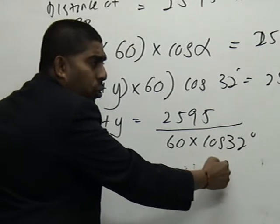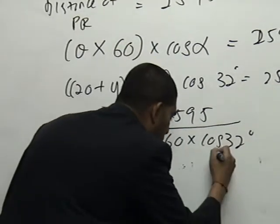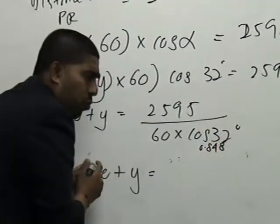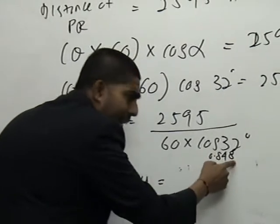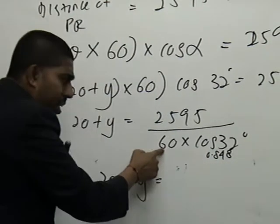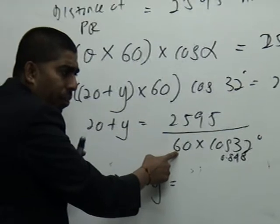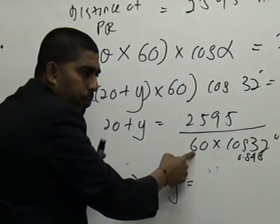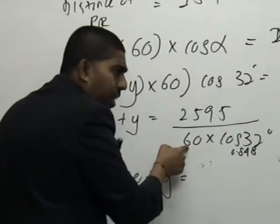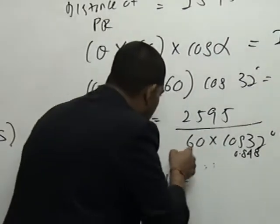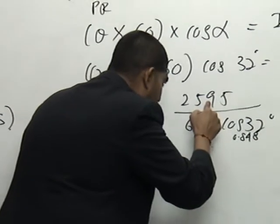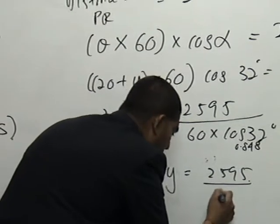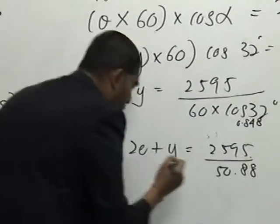How much is cos 32 degrees? 0.848. So, the 0 at the back is okay. So, 0.848. Thank you for that. 0.848 multiplied by 60. How much is that? 0.848 multiplied by 60. So, what do I do now? 2, 5, 9, 5 I divide by 0.848 multiplied by 60. And how much would that be?